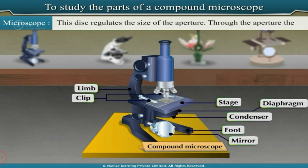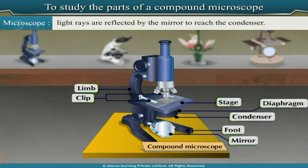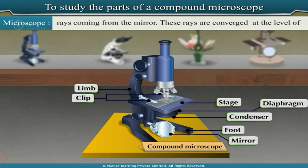Through the aperture, the light rays are reflected by the mirror to reach the condenser. The condenser consists of two or more lenses which receive the light rays and converge them at the level of the stage.